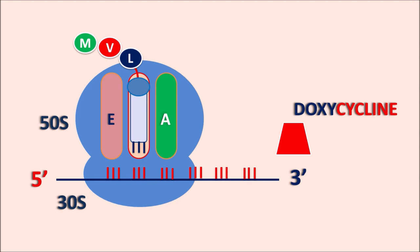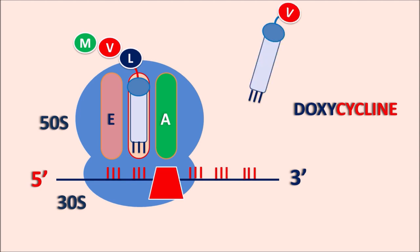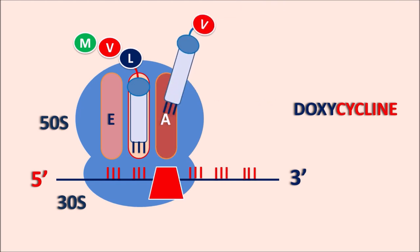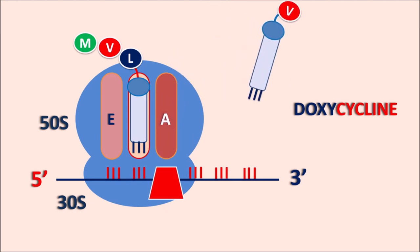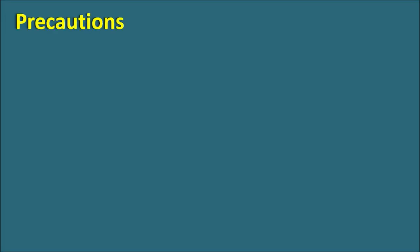In the presence of doxycycline, protein synthesis within the bacteria is inhibited. Doxycycline binds to the 30S subunit within the bacterial ribosome, with little activity on the 50S ribosome, thereby inhibiting the attachment of tRNA. The A site is partially inhibited, so tRNA cannot bind to the A site, and protein synthesis is inhibited. In this way, doxycycline inhibits protein synthesis within the bacteria, producing a bacteriostatic activity.